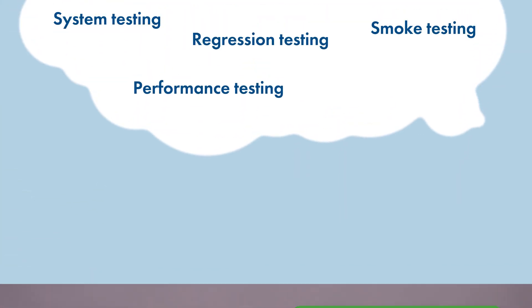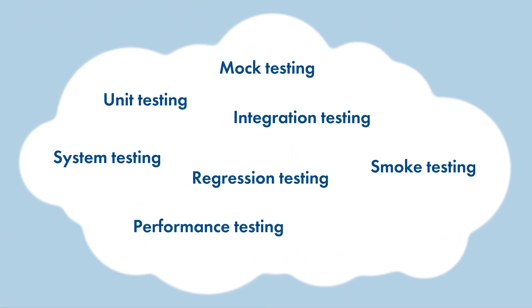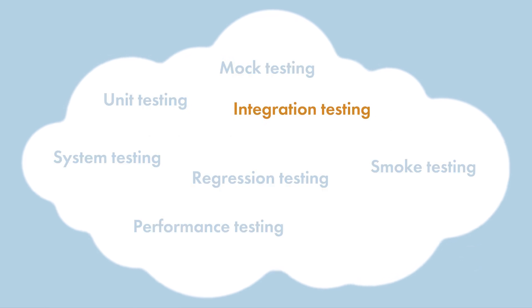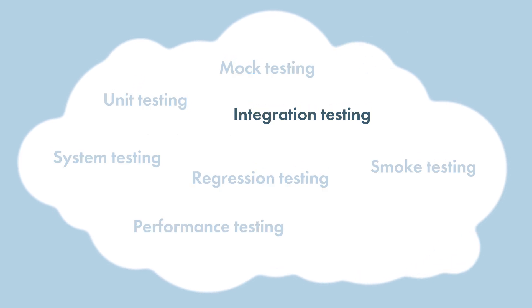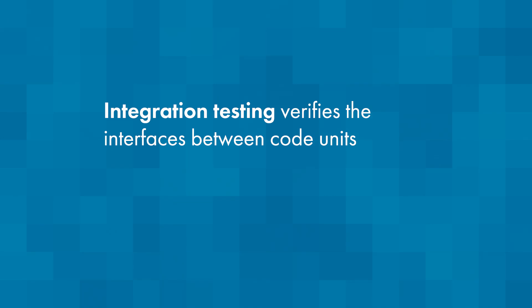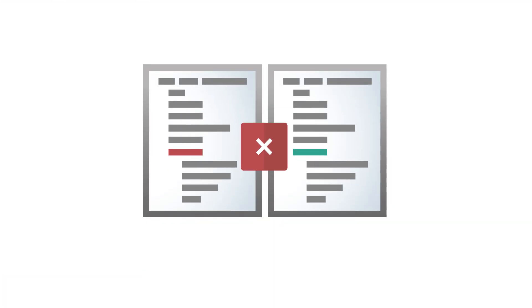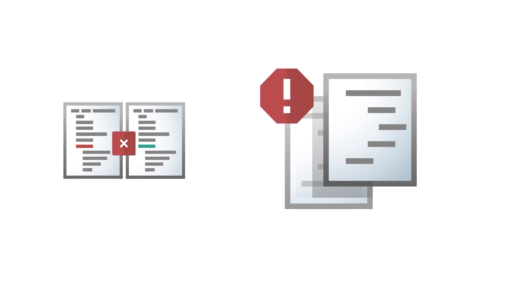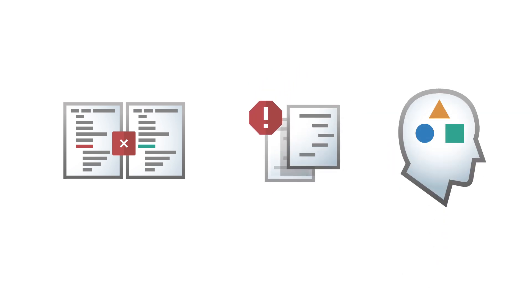So, in addition to unit testing, the second type of software test we can leverage is integration testing. Integration testing verifies the interfaces between the code units to ensure they interact as expected. Integration testing is needed for detecting issues such as data format inconsistencies, code interface incompatibilities, or incorrect assumptions about component interactions.